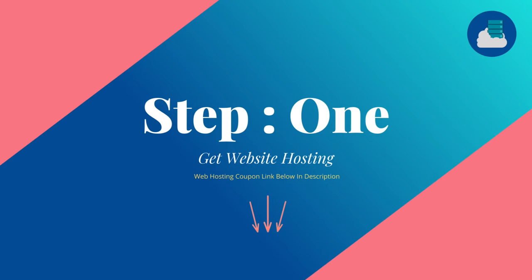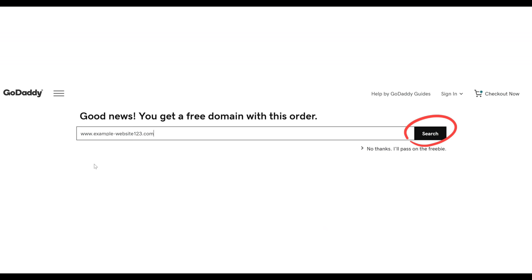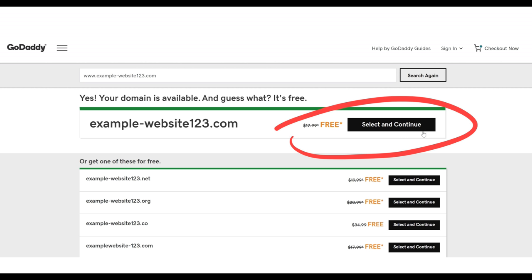So that brings us to the first step: getting our website hosting. Click the link below in the description of this video — that's going to automatically apply the discount code and bring you to the page. Click on the Get Started button, and then we're going to pick our domain name. This is where you search to see if the domain name you want is available. Once you find one that's available, you'll see it says your domain name is available, and then just click on Select and Continue.